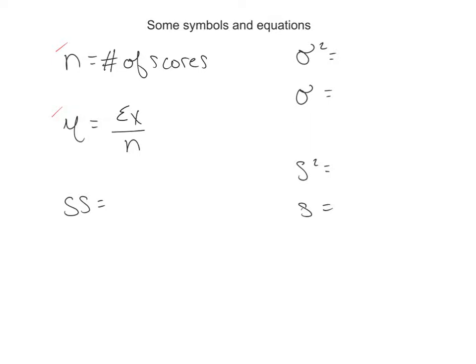The next one here, sum of squares, this is a huge formula in statistics, and how you find that one is sum of x squared minus sum of x squared divided by n. I know that these two, sum of x squared and sum of x squared right here, kind of sound the same. They're not.